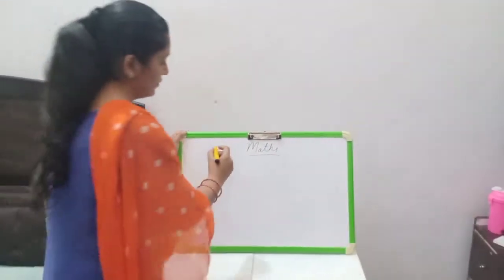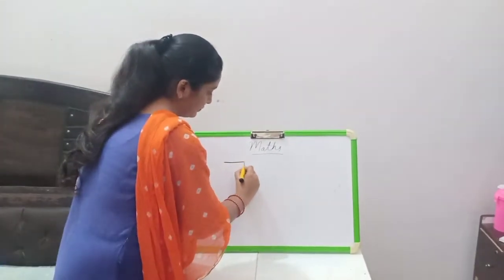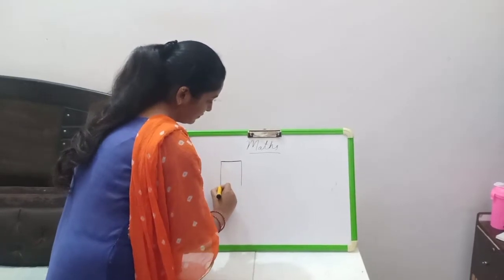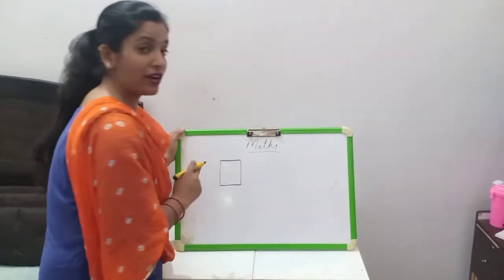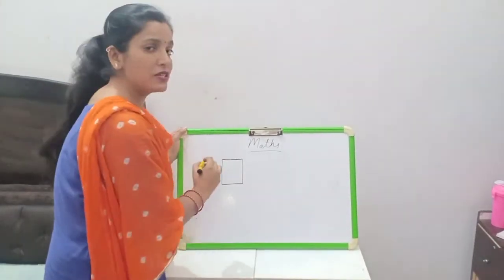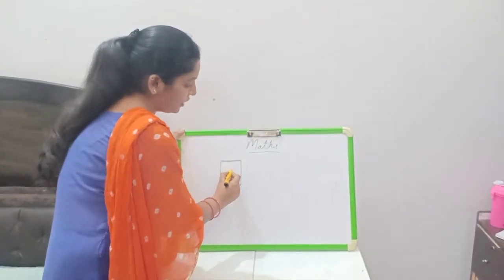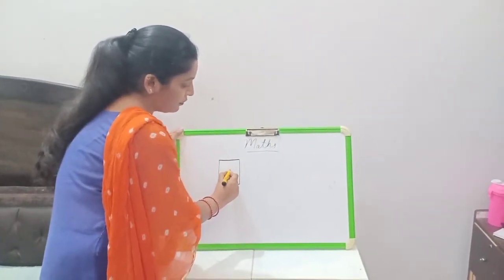Number one. Yeh humara block hai. Isme hum kyaise dot lagayenge? One dot lagayenge haam. Middle of the box.